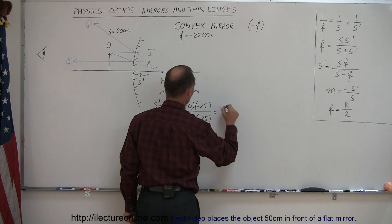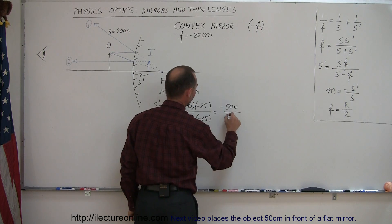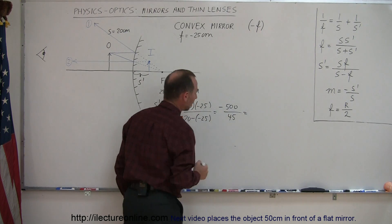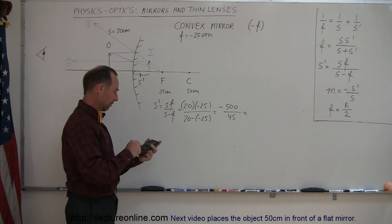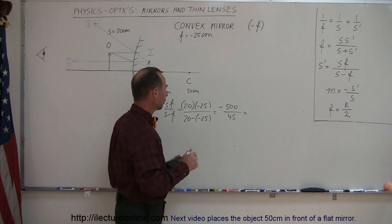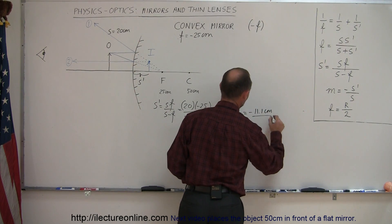So this will be a minus, looks like 500 divided by 20 plus 25 or 45. So that looks like about 11 point something. Let's see here. 500 divided by 45 is 11.1 and it's going to be negative. Negative 11.1. Of course that would be in centimeters.